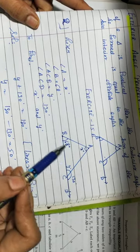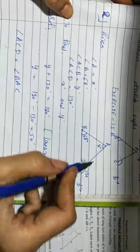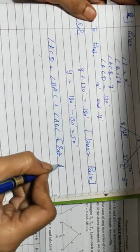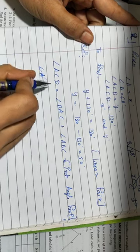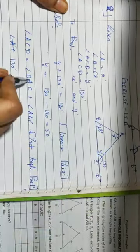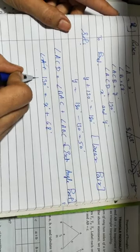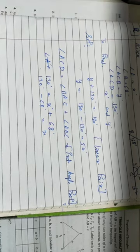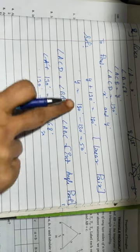Now using exterior angle property: angle ACD = angle BAC + angle ABC, so 130 = X + 68. Therefore X = 130 − 68 = 62°. So measure of angle X = 62° and angle Y = 50°.